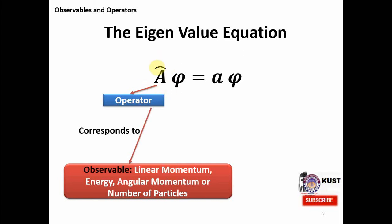When we have an operator, it must have a corresponding observable quantity. For example, we can have an operator for linear momentum, and so similarly for energy, angular momentum, or number of particles. Now, once we have an operator, it has to act on some kind of function. In quantum mechanics, this function is called the wave function, because quantum systems have a wave nature associated with them.